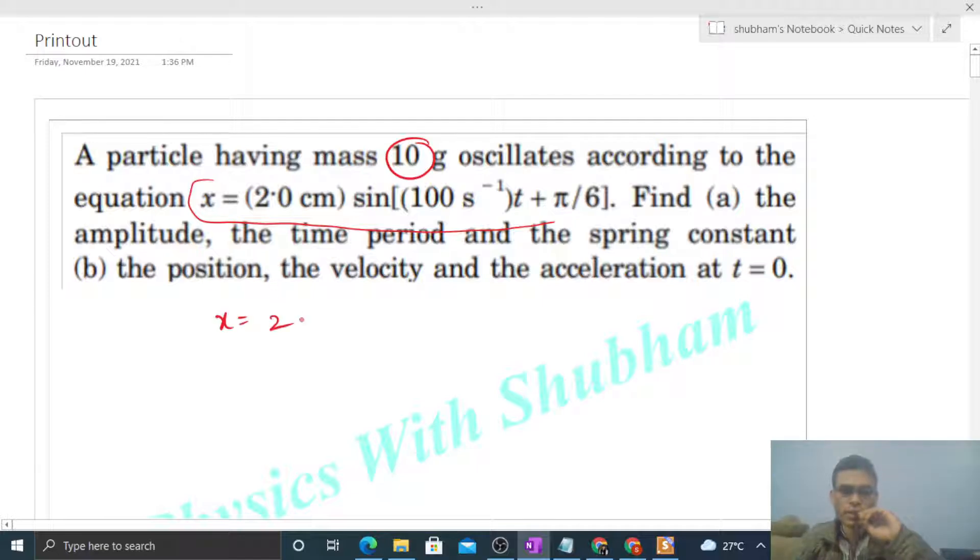See, the equation we have to give in standard form, that is x = 2 sin(100t + π/6). So we can compare this equation with A sin(ωt + φ).